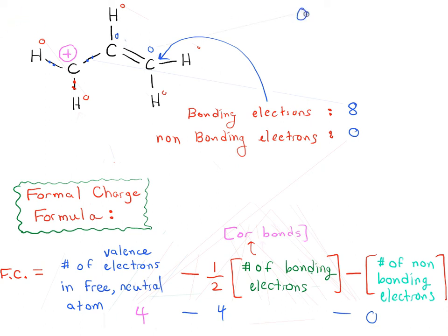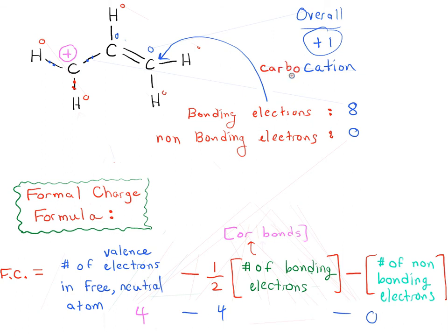Overall, the molecule has a charge of plus one, because the only atom with a charge is the carbon on the far left. So it has a charge of plus one. Because it has a positive charge, it's what we call a cation — and specifically, because the cation is on the carbon, you'll see it called a carbocation.